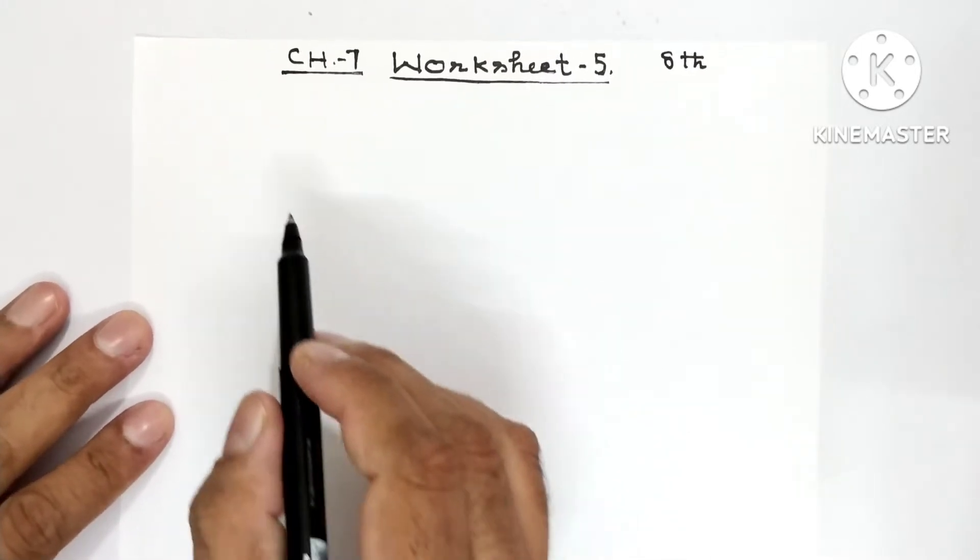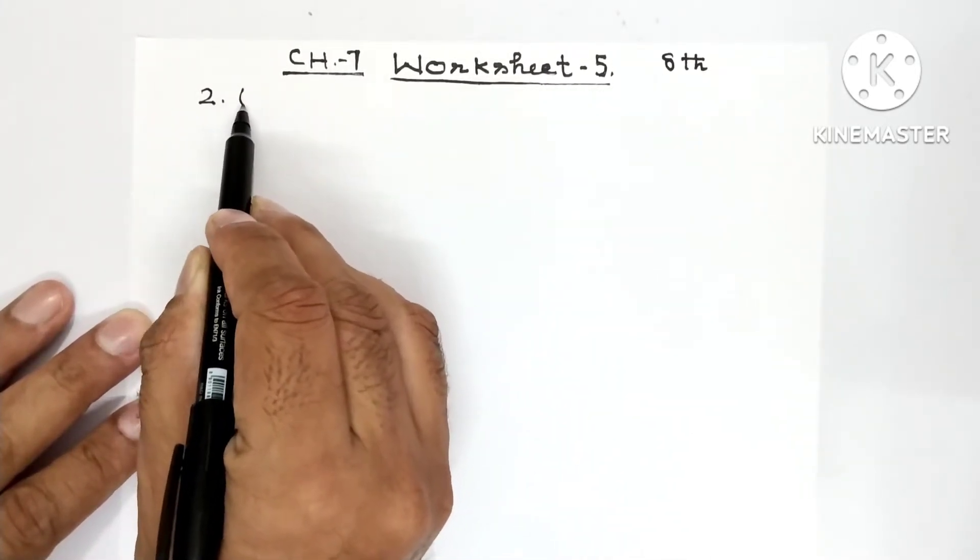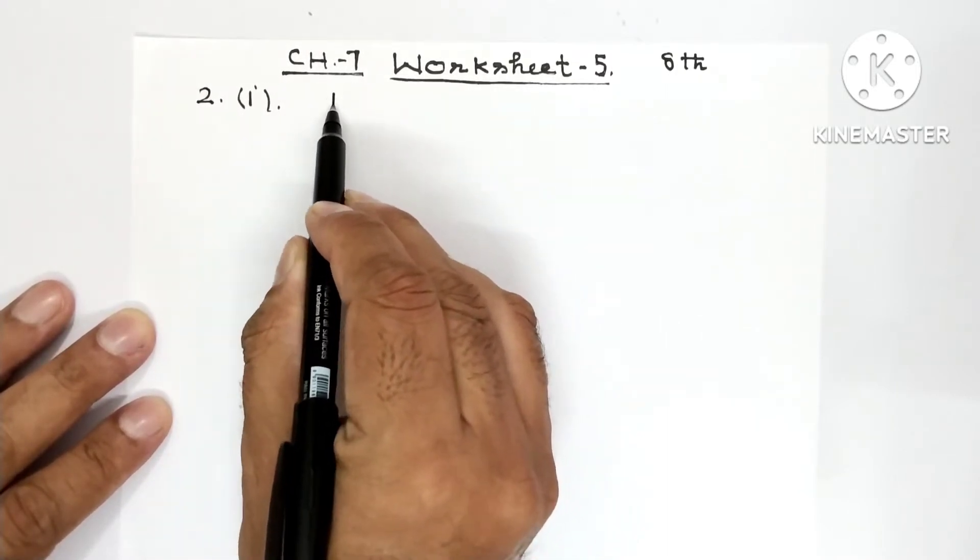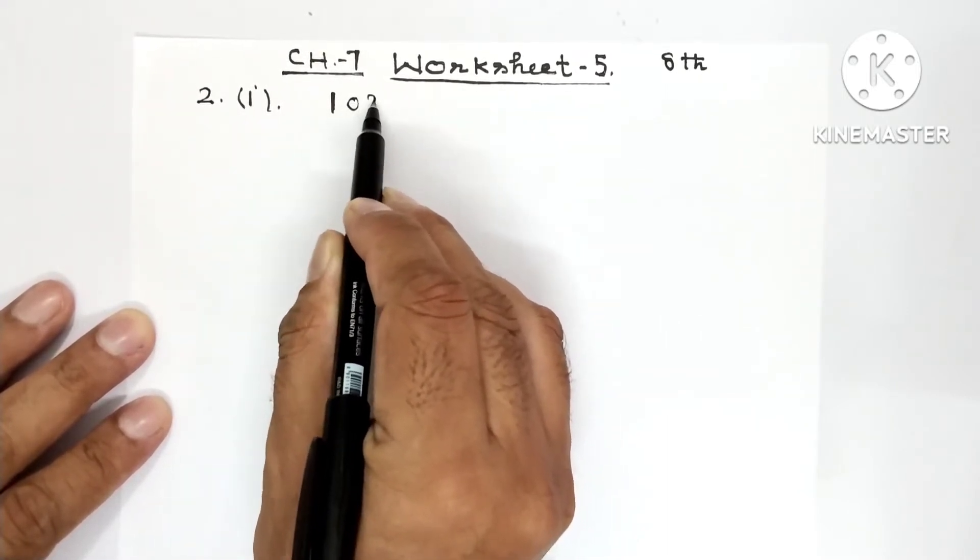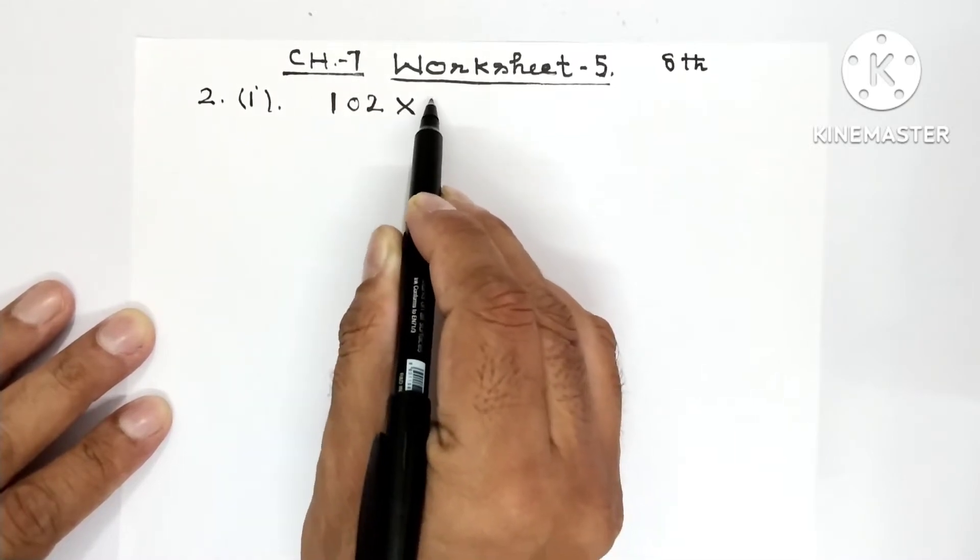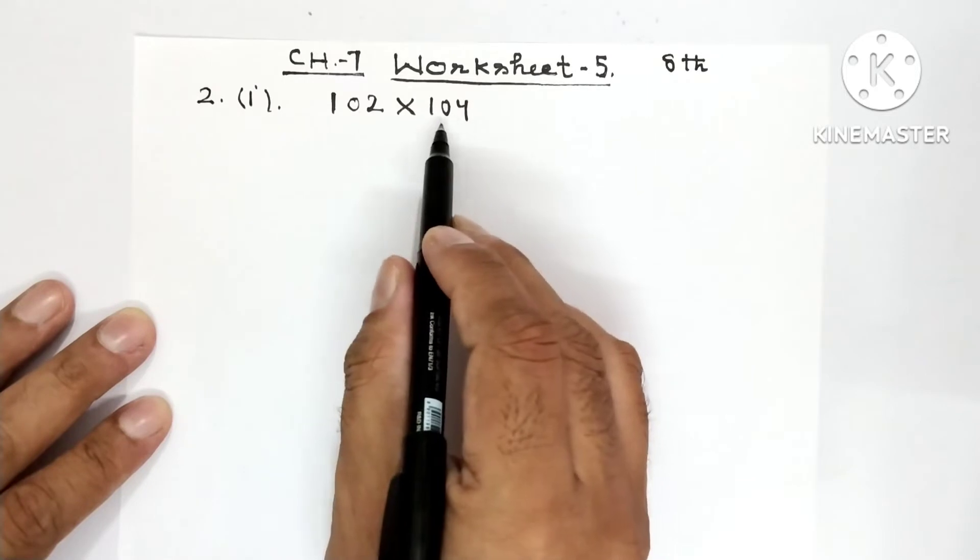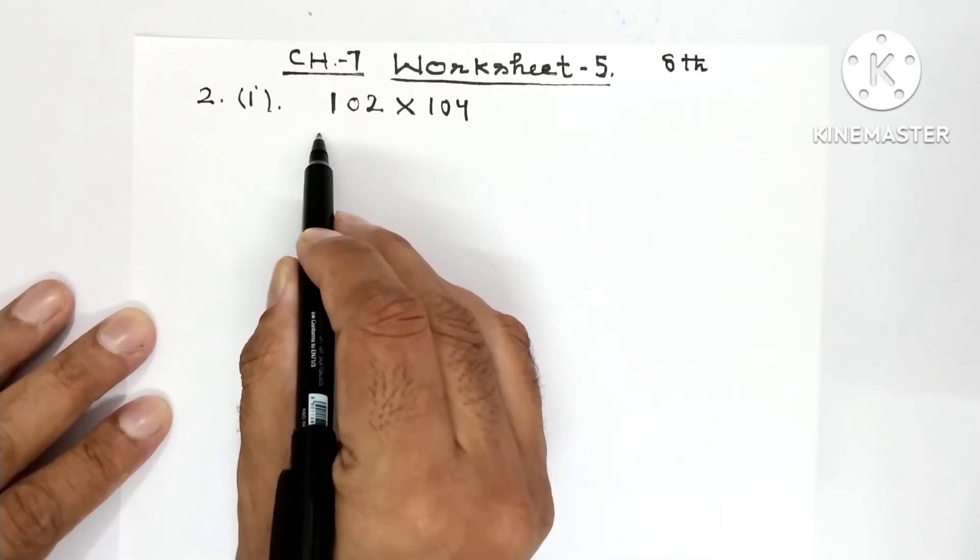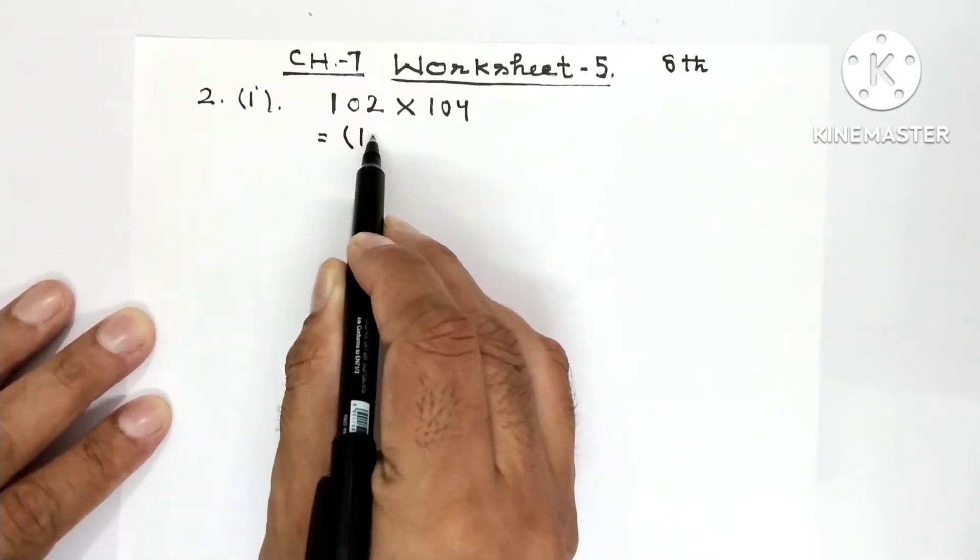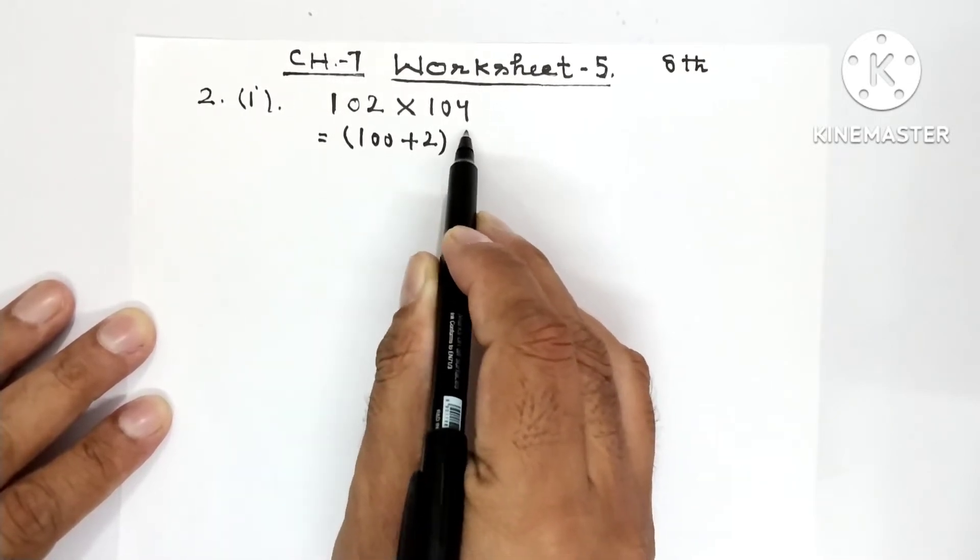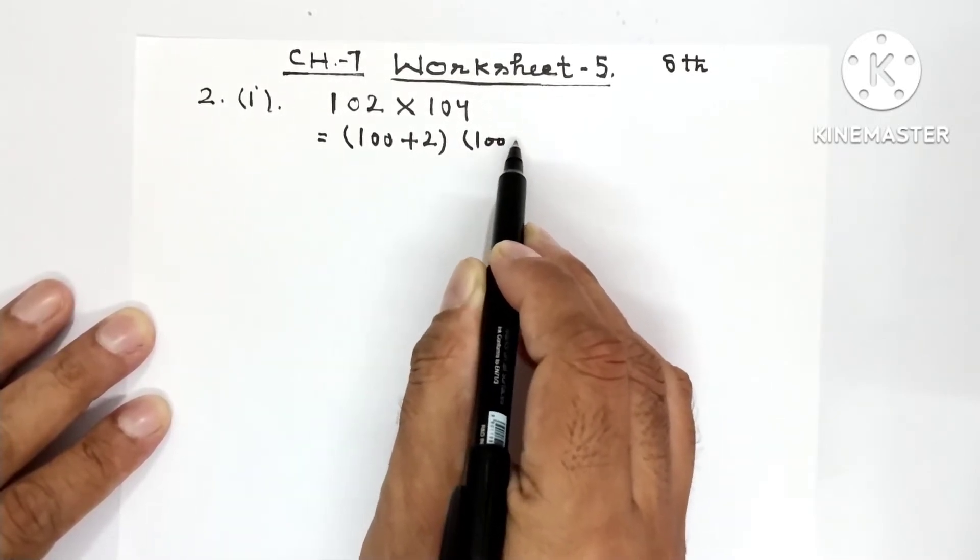So question number 2 and this is part number 1. By using suitable identity, evaluate 102 × 104. Both these numbers are nearby 100, so we can write it as (100 + 2) in one bracket, (100 + 4) in other bracket.